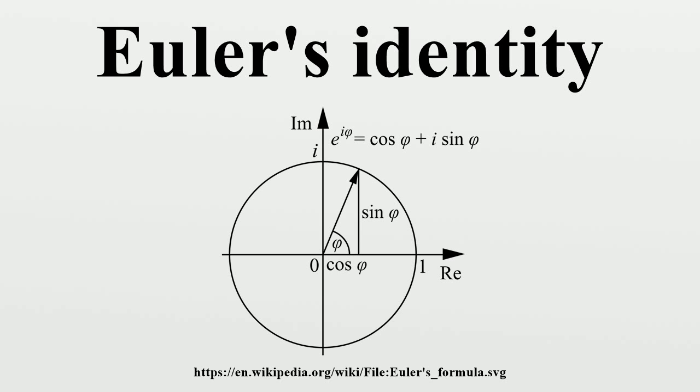Generalizations: Euler's identity is also a special case of the more general identity that the nth roots of unity, for n greater than 1, add up to 0. Euler's identity is the case where n equals 2.